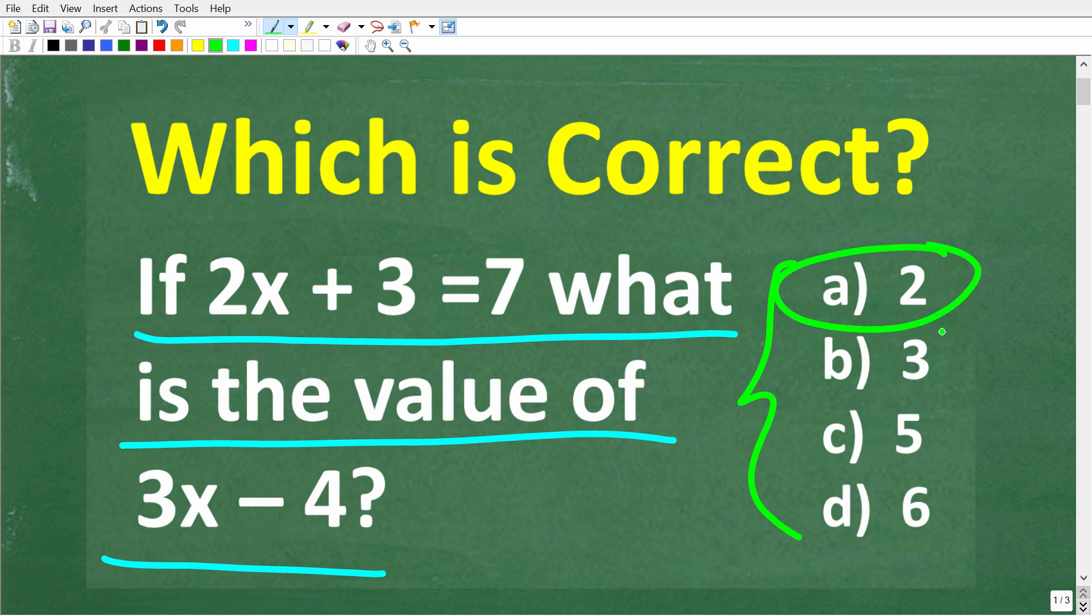Now we do have a multiple choice question here, and let's take a look at our answers. So A is 2, B is 3, C is 5, and D is 6. Now try not to use a calculator.